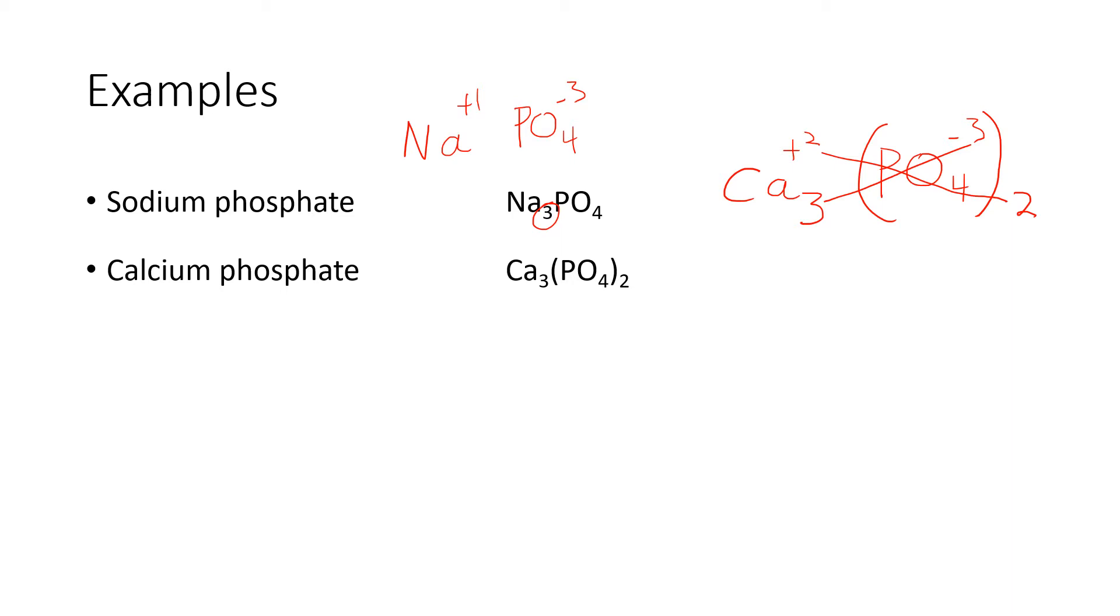That's telling us that we need 2 of the phosphate ions. If we just wrote PO4 and then just wrote another 2, it would look like we have a phosphorus with 42 oxygens. And that's not what we're meaning. We need 2 of the cluster of PO4 that has a minus 3 charge.